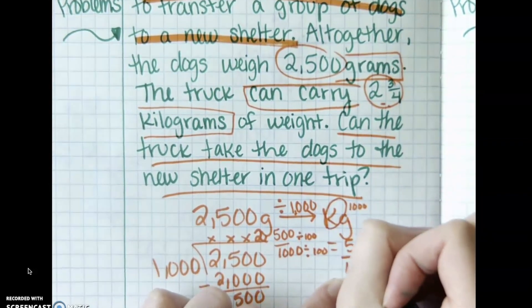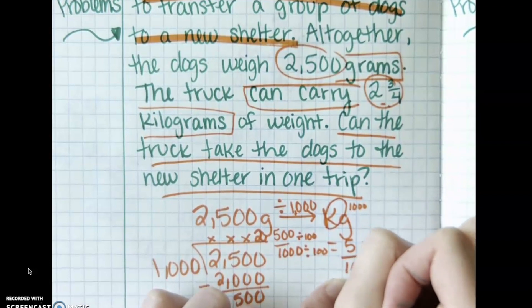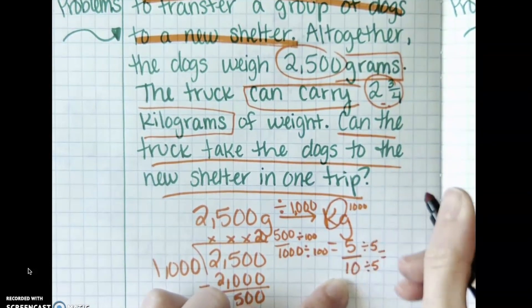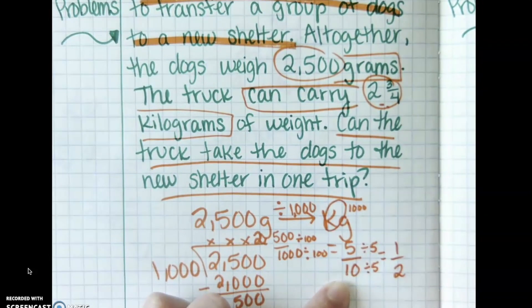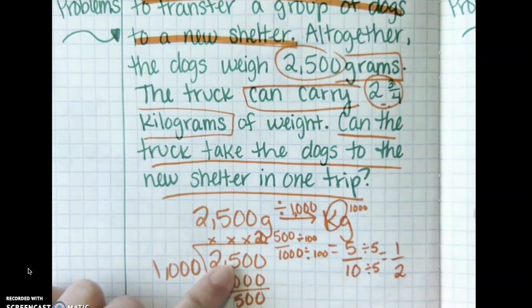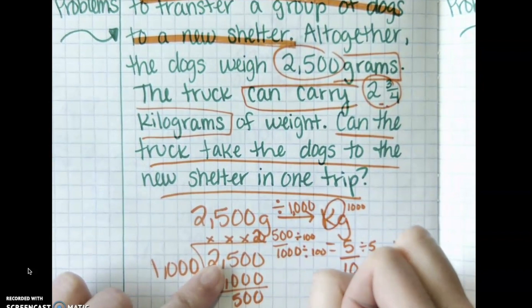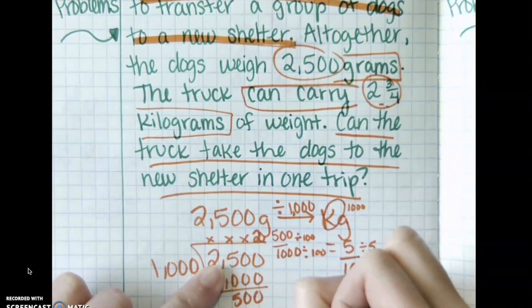Oh, I can divide that even more by five on the top and bottom. Some of you may have been able to see already that it equals one half. Wow. So the dogs weigh two and one half kilograms.